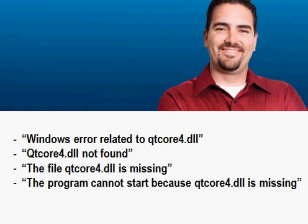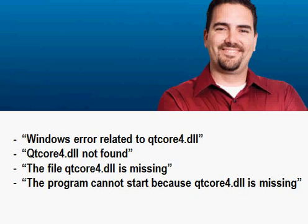The first question you may have is: how do I know that I have a QtCore.dll error? You probably have one of the following four messages on the screen: a Windows related error to the QtCore.dll, the QtCore.dll not found error message, a message saying the file QtCore.dll is missing, or something saying the program can't be found because the file is missing.